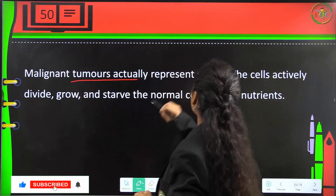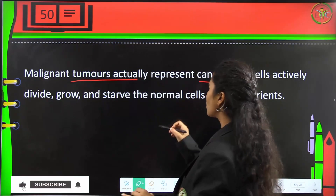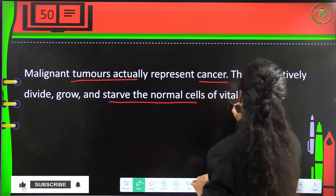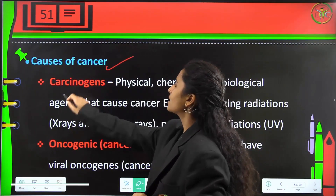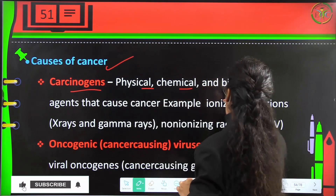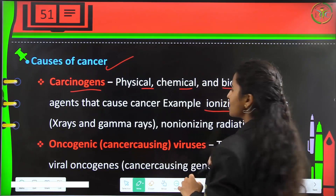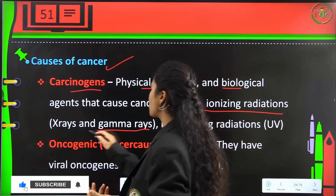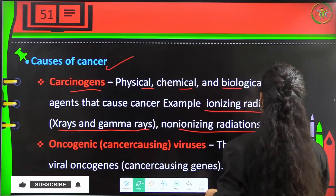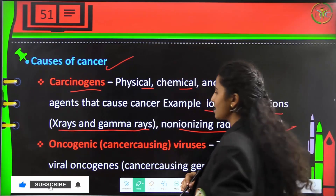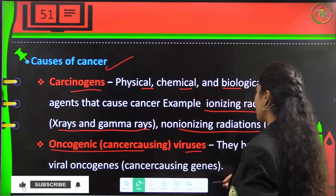Malignant tumours represent true cancer. The cells actively divide, grow, and starve normal cells of vital nutrients. Causes of cancer are carcinogens, including physical, chemical, and biological agents. Examples include ionising radiations — over-exposure to radiation causes radiation-induced cancers — and non-ionising radiations such as ultraviolet rays, which also cause cancer.